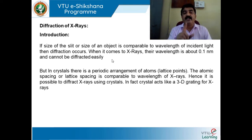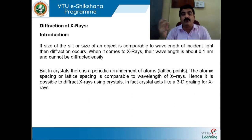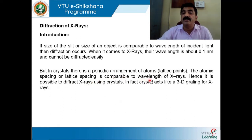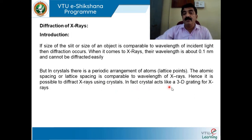Fortunately, X-rays can be diffracted with the help of crystals. In crystals, there is a periodic arrangement of atoms — atom by atom — and the spacing between two atoms is very, very small, in the range of 0.1 to 1 nanometer. This is the atomic spacing or lattice spacing. The spacing is comparable to the wavelength of X-rays, and hence it is possible to diffract X-rays using crystals. In fact, a crystal acts like a 3D grating for X-rays.